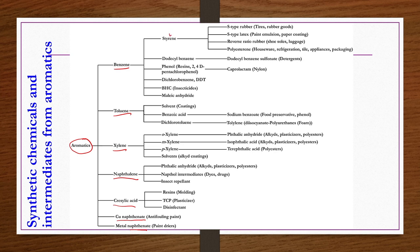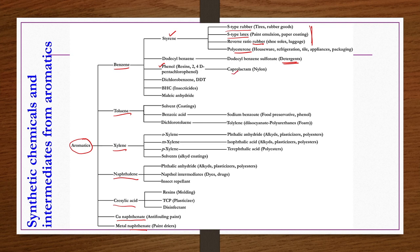Benzene can be utilized to produce styrene, mostly used in polymerization for rubber and latex manufacturing. Polystyrene applications include tires, rubber goods, paint emulsions, paper coating, shoe soles, luggage, houseware, refrigeration, tiles, appliances, and packaging. Dodecylbenzene can be produced from benzene, then sulfonated for detergent manufacturing. Benzene can also be used to produce phenol, dichlorobenzene, DDT, BHC, and maleic anhydride.